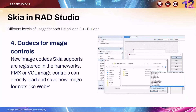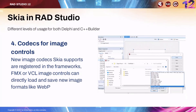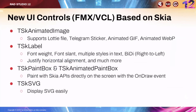There is another level of usage that's also interesting: codecs for image controls and image formats. In this case, there is really nothing you have to do — Skia enables these new image encodings for the existing VCL and FireMonkey image controls. So you don't need to use specific Skia UI controls; it's available for both platforms. The controls include animated image, label, paint box, animated paint box, and SVG.